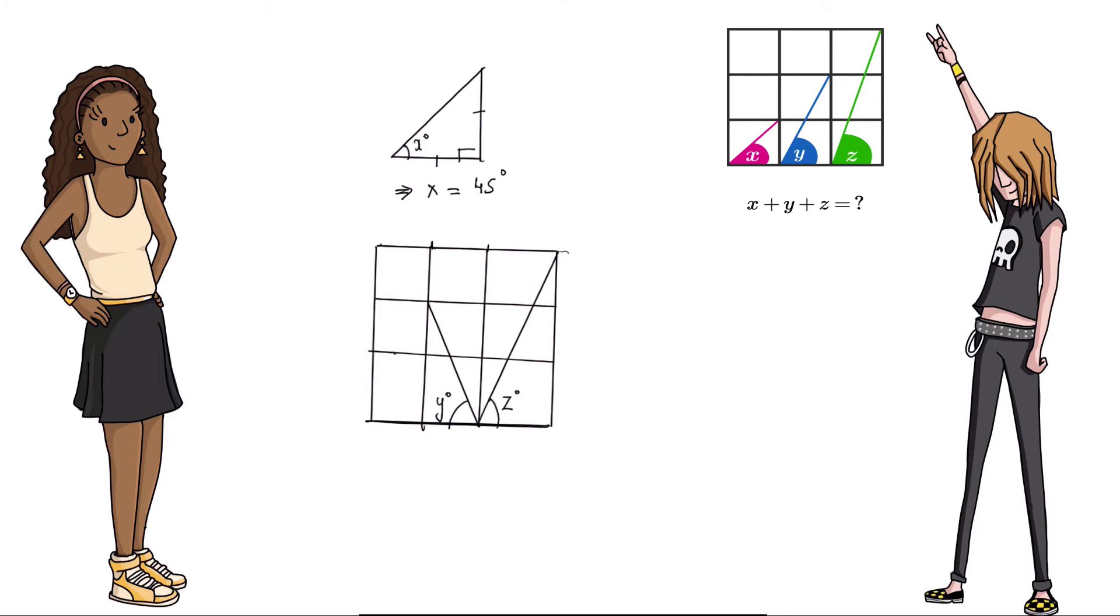Angle y and angle b here add up to 180 degrees since they are on a straight line. Let me call this angle b. So y plus b is 180 degrees.